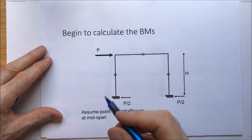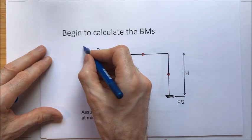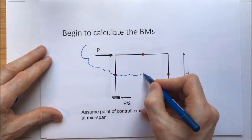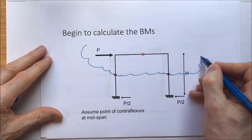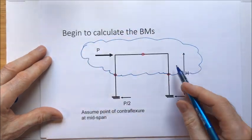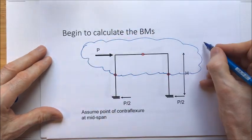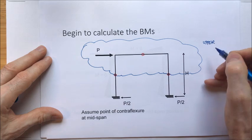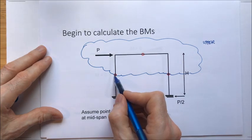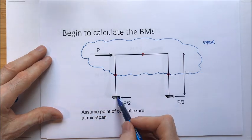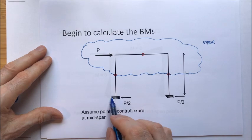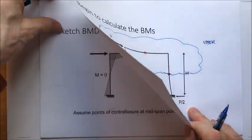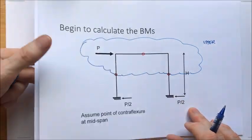There's a really convenient way to split this structure up. We draw out the upper frame as a separate sub-frame and look at that first, and then look at the lower frame. The lower frame is incredibly simple — it's just simple vertical cantilevers.